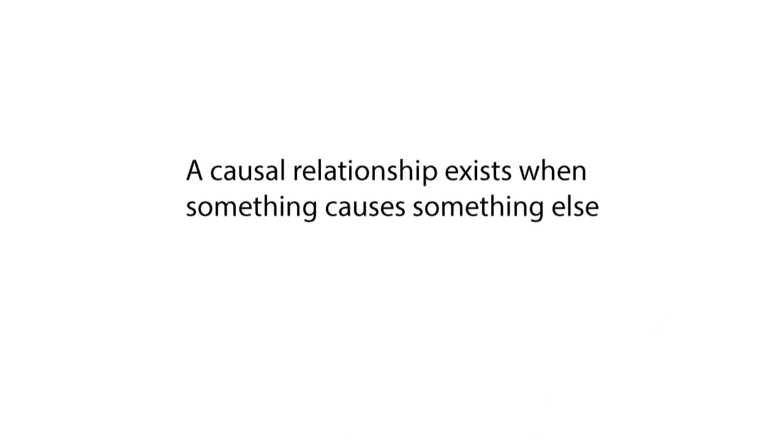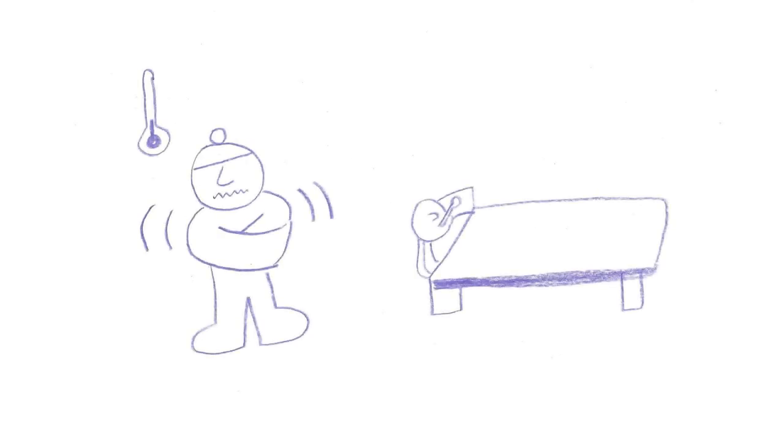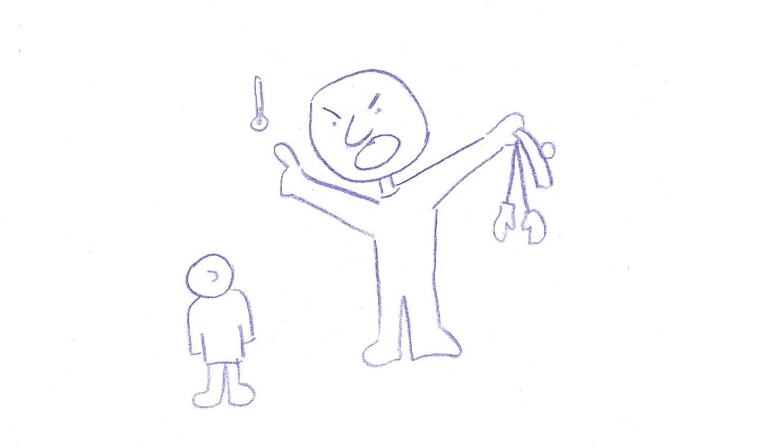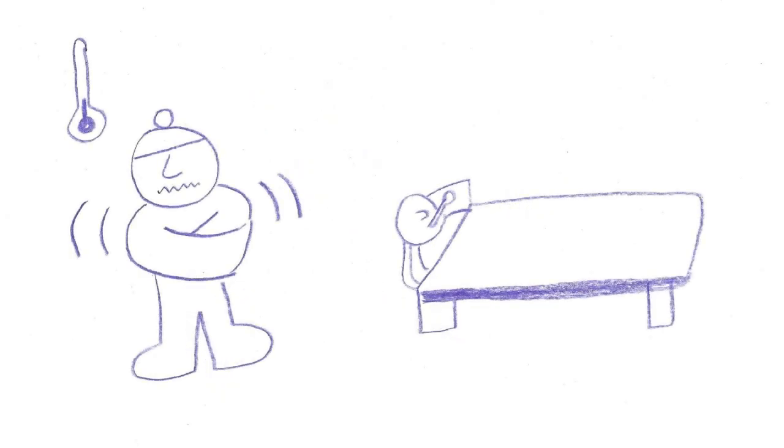A causal relationship exists when one thing causes something else. For example, we tend to get sick in the winter. We assume that the cold is somehow playing a role in making us sick. So we tell our kids to bundle up, or else they'll catch cold. We're assuming a causal relationship, that coldness generates illness. And that assumed causal relationship affects our choices. We nag our kids.